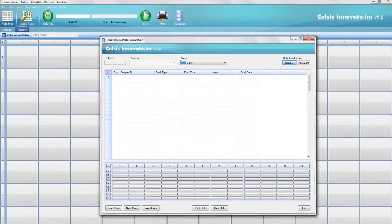Click on the plate prep icon. Enter the plate ID, protocol, and assay. Activate the wells that correspond to where your samples are in the plate. Then, enter the sample ID and other user-specified information.